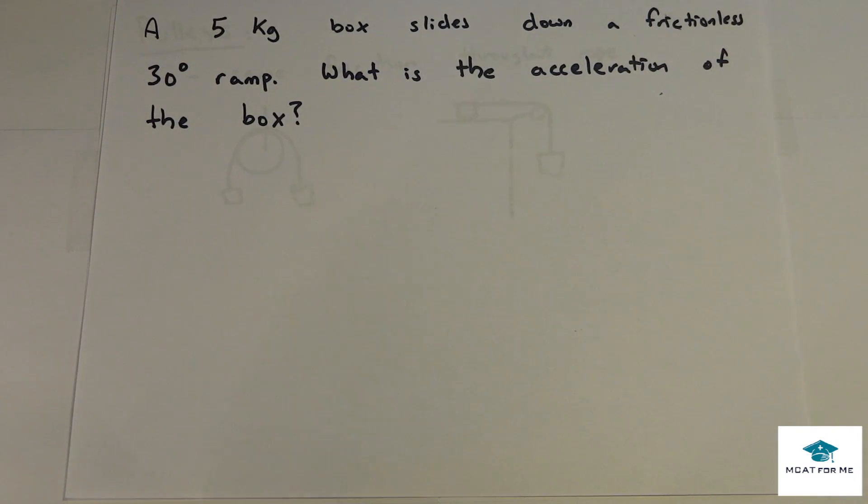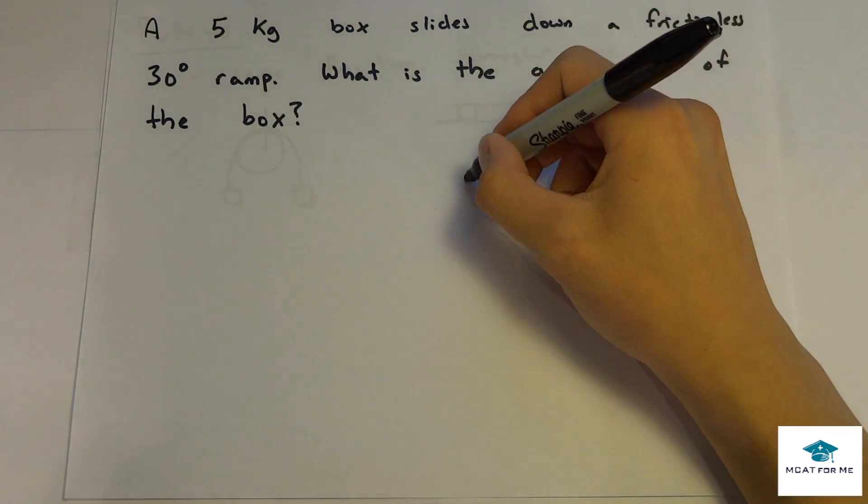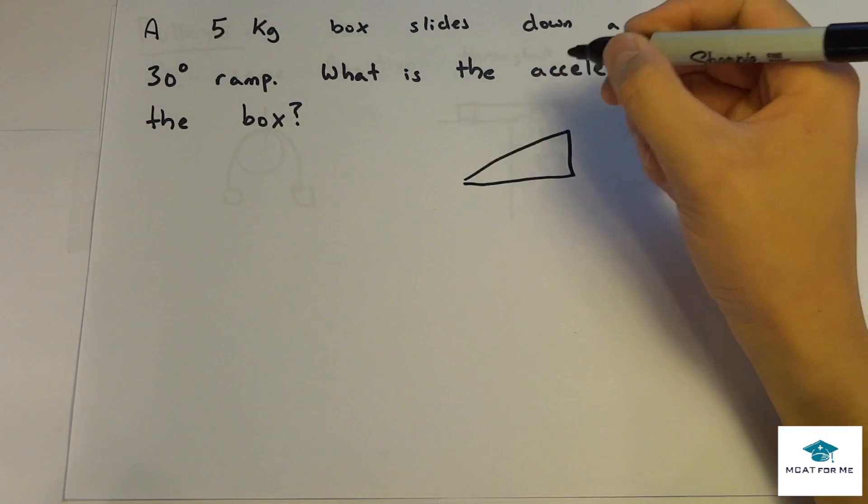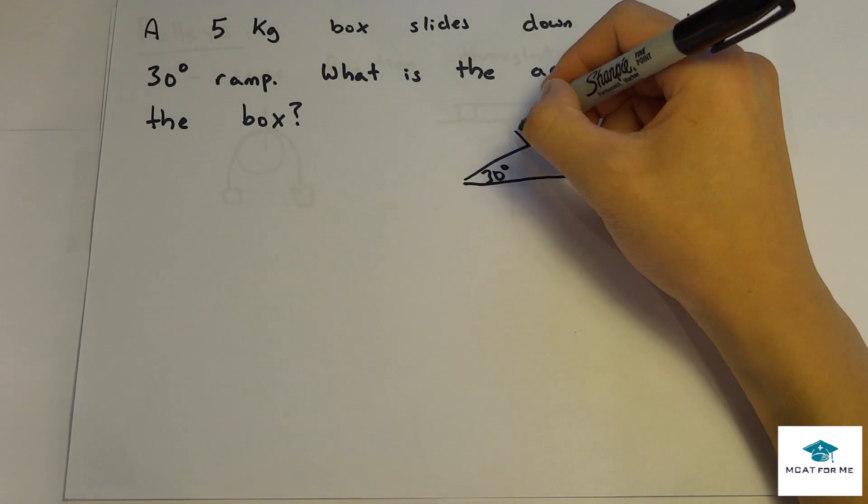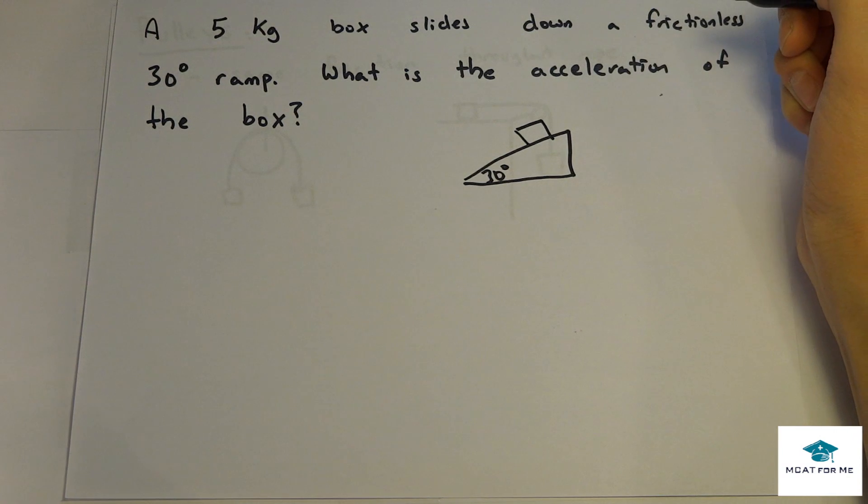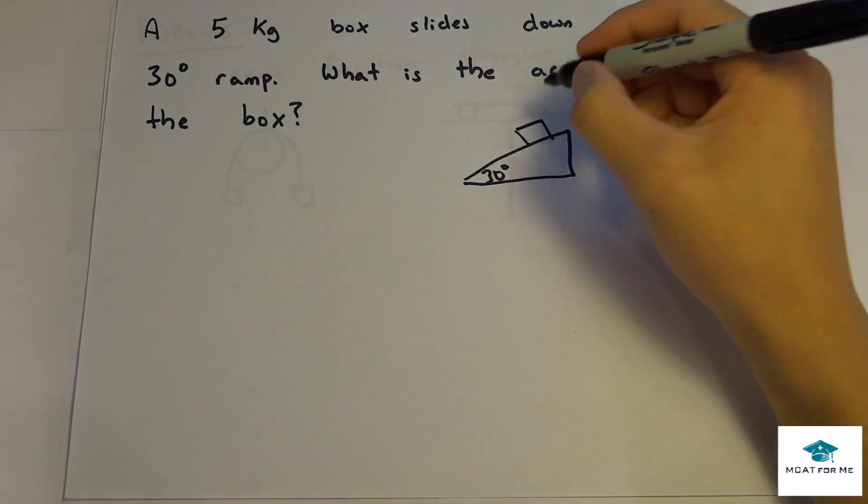So in this one we have a 5 kilogram box slides down a frictionless 30 degree ramp. What is the acceleration of the box? So the first thing we want to do is we want to draw this inclined plane, and so it's 30 degrees. And we have this 5 kilogram box like that.